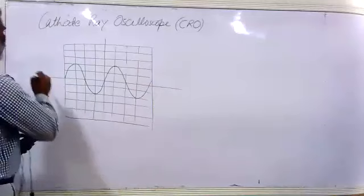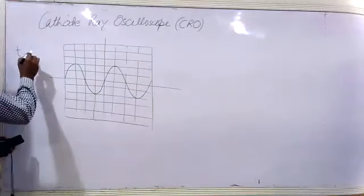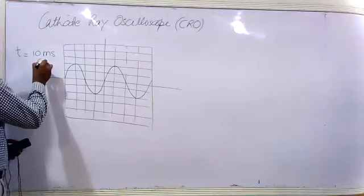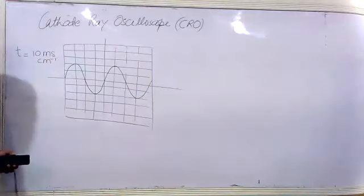If the time-based setting is given, t is suppose this is 10 millisecond per centimeter. This is the time-based setting that is often given in the statement of the question, and along with this figure you easily see how many boxes one trace is fitted in.